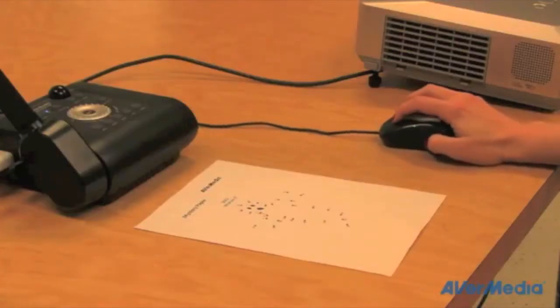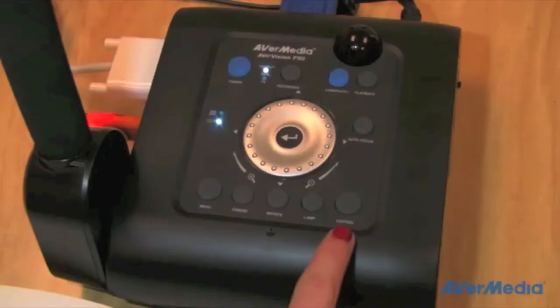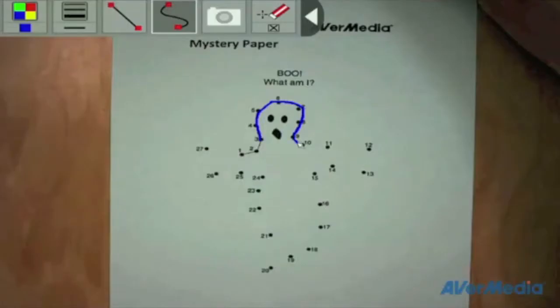But what makes the F50 really stand out is the brand new onboard annotation feature. No need to plug in your computer to mark up a paper. Simply plug in your mouse or AverPen, take a photo, play it back and you're ready to go.